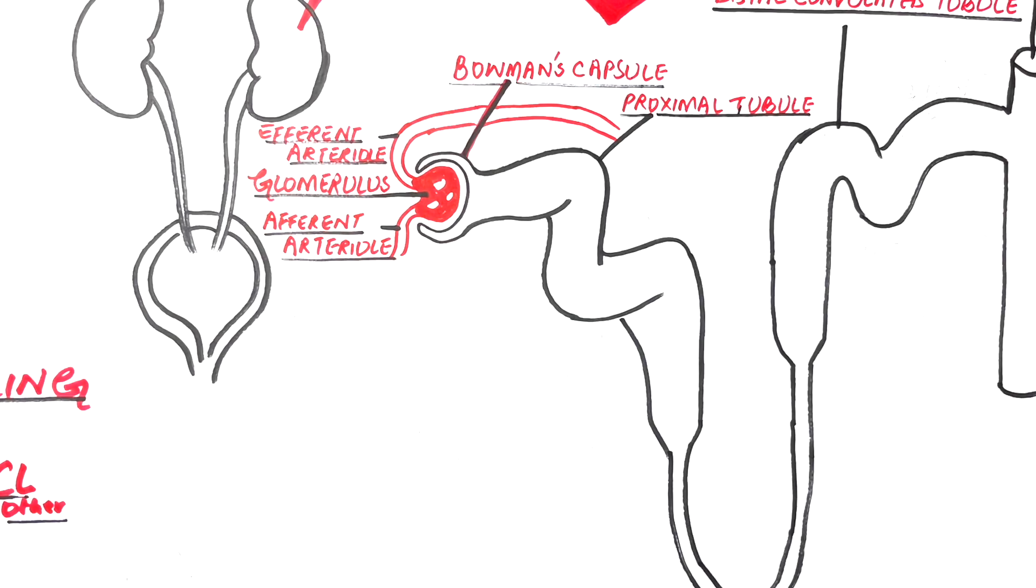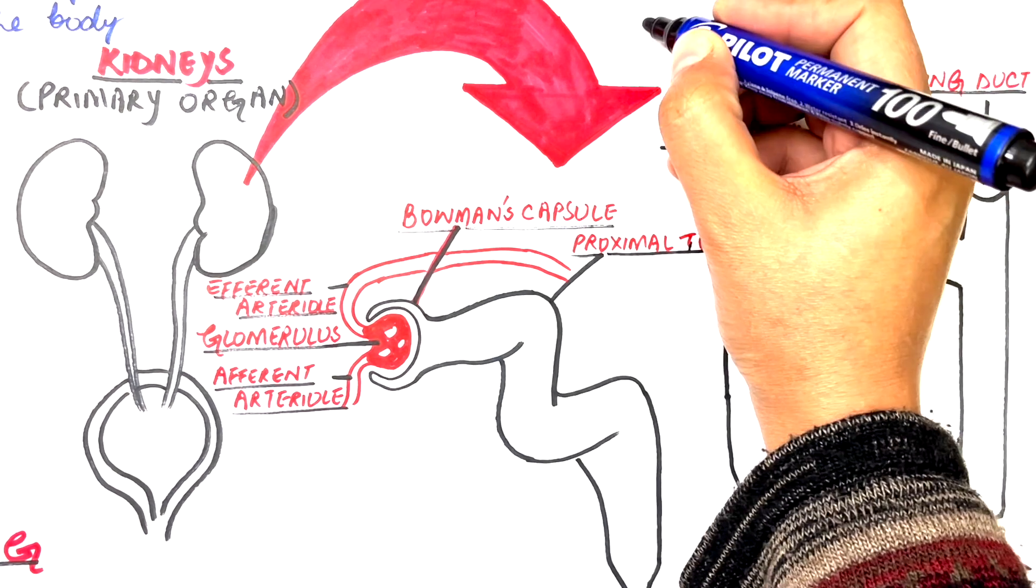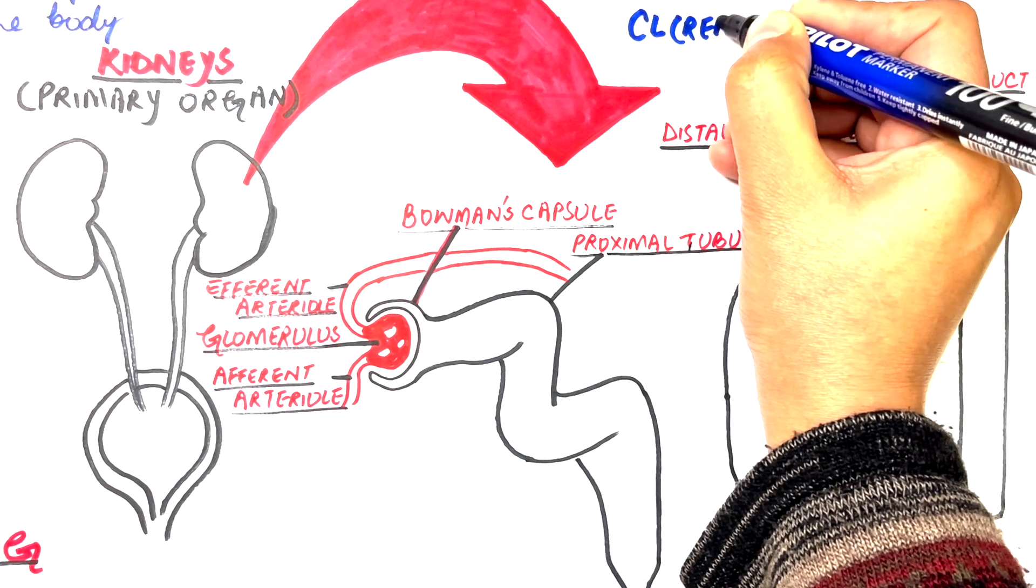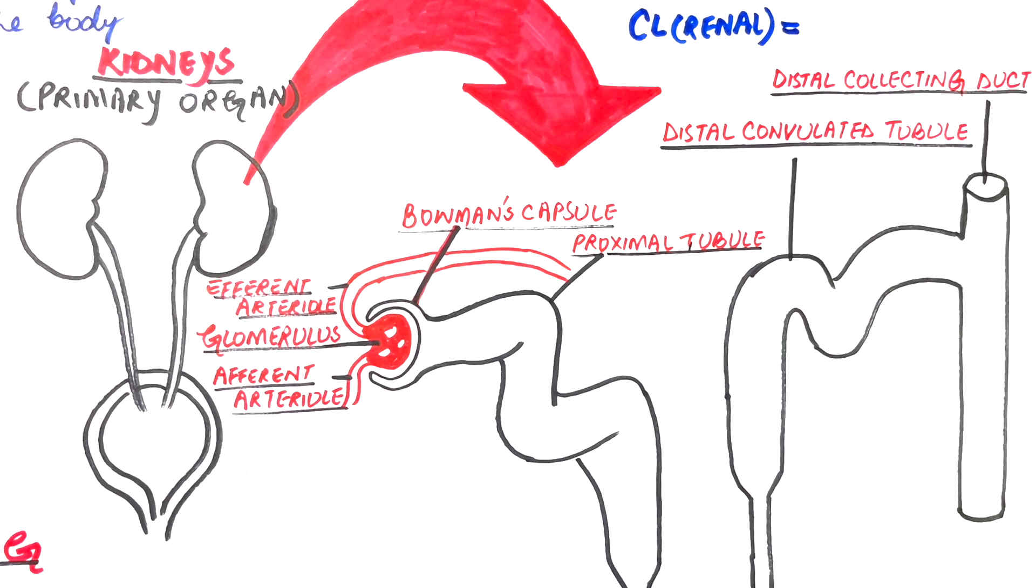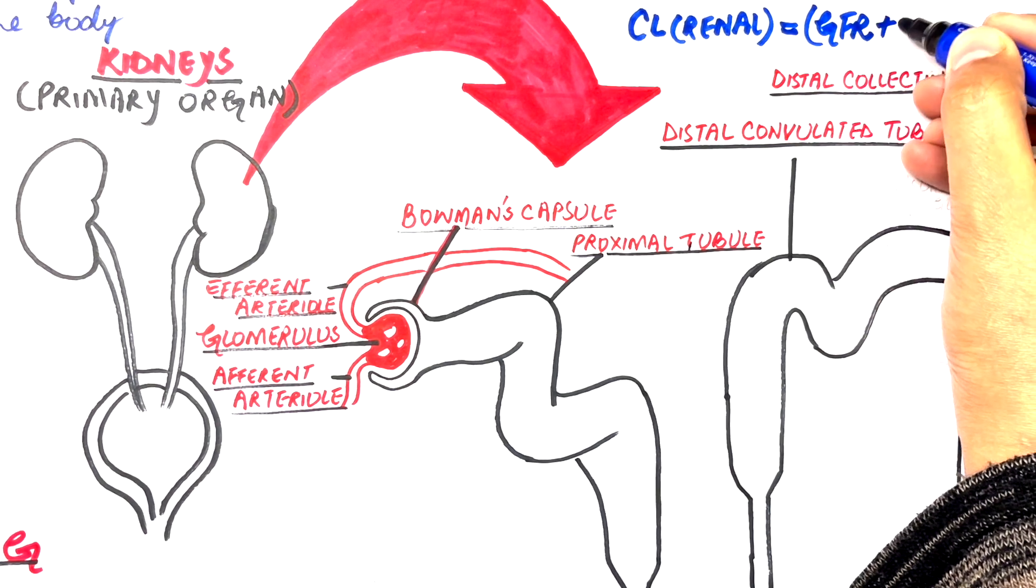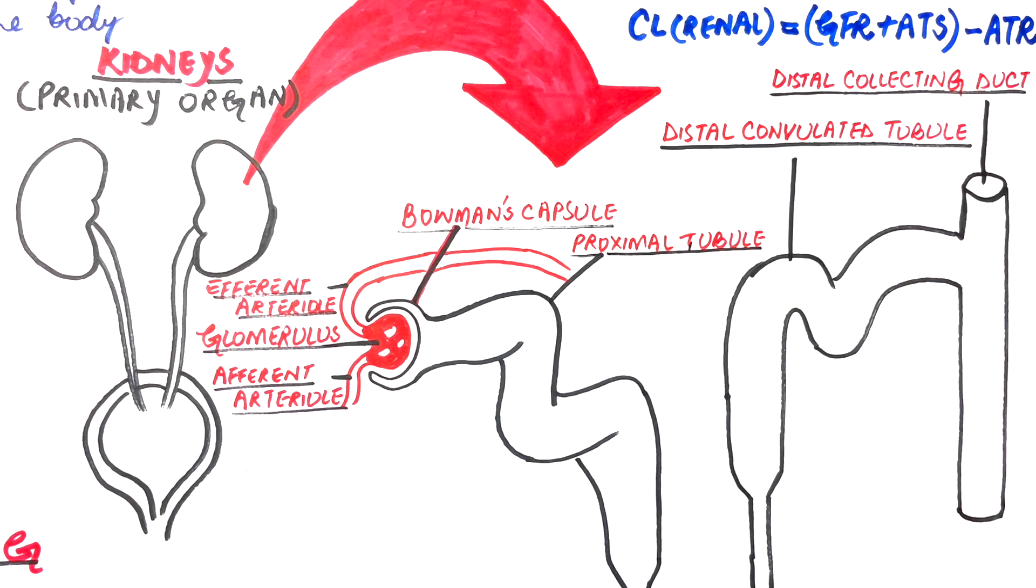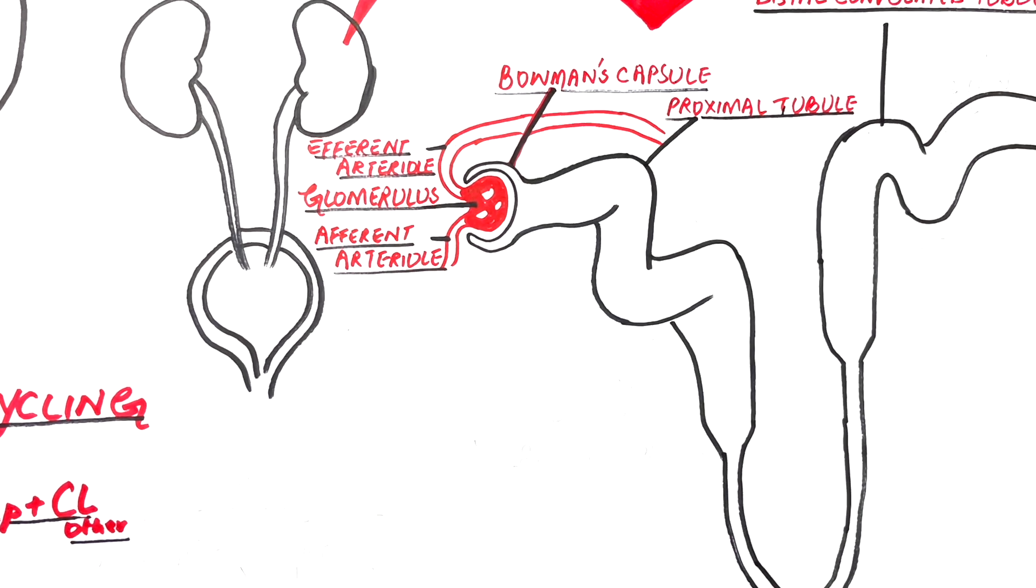Hence, the total renal drug clearance can be conceptualized by considering the following equation: clearance in the renal tubules equals GFR or the glomerular filtration rate plus active tubular secretion minus active tubular reabsorption. Let's talk about each one of them in some detail.